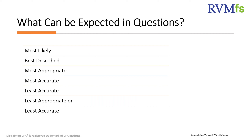What you can expect are qualifiers like 'most likely,' 'best described,' 'most appropriate,' 'most accurate,' 'least accurate,' and 'least appropriate.' I have given you the list as well.